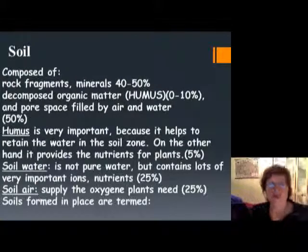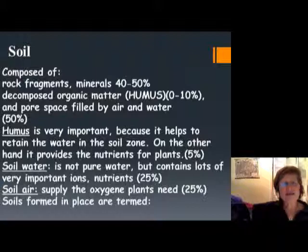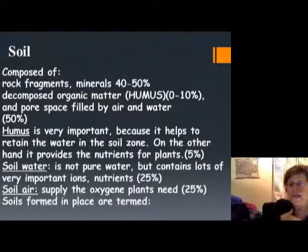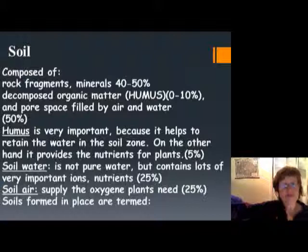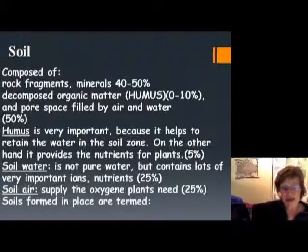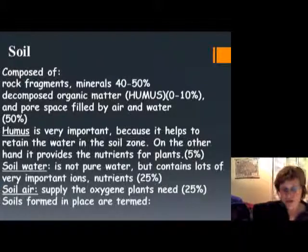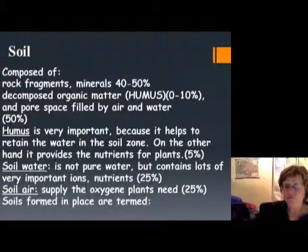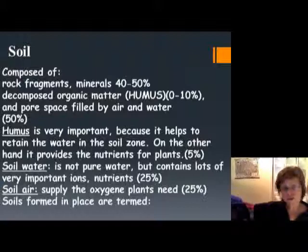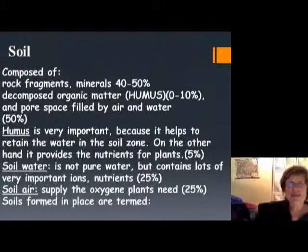The uppermost layer of the regolith is what we call soil. Soil is usually composed of rock fragments and minerals, which take up about 40 to 50 percent of the soil. It has decomposed organic matter — what we call humus — between zero and ten percent. Then you have pore space filled up by air and water, giving the other 50 percent. Humus is very important because it gives all the organic matter — basically the food for the plants — and provides nutrients.